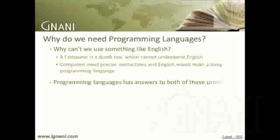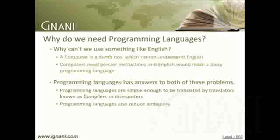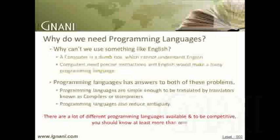Programming languages have answers to both of these problems. They are simple enough to be translated by translators known as compilers or interpreters, which can convert code written in these programming languages into binary code understandable by machines. And these programming languages also reduce ambiguity. There are a lot of different programming languages available, and to be competitive in today's world, you should know at least more than one. In this course, we will be learning the C language.